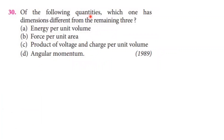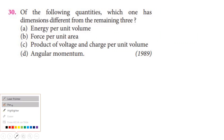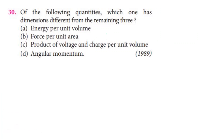Next question: of the following quantities, which one has dimensions different from the remaining three? First option — energy per unit volume: energy divided by volume gives ML²T⁻² divided by L³, which equals ML⁻¹T⁻².